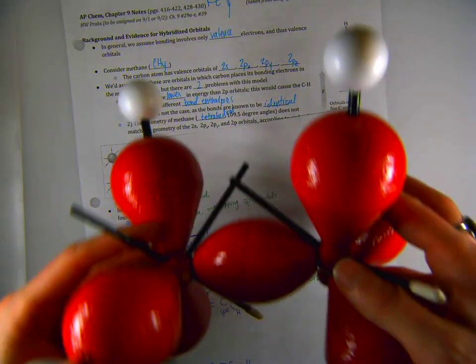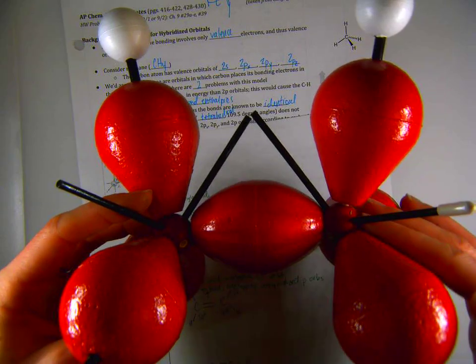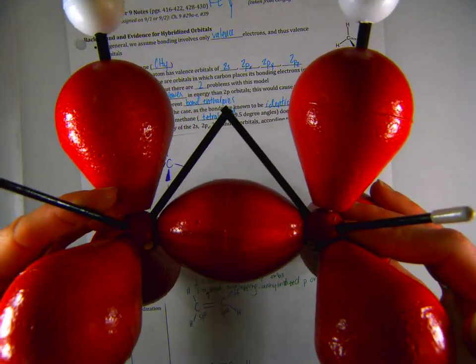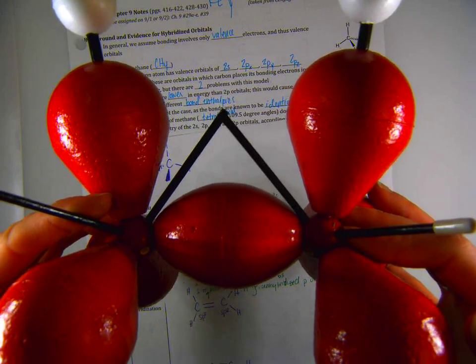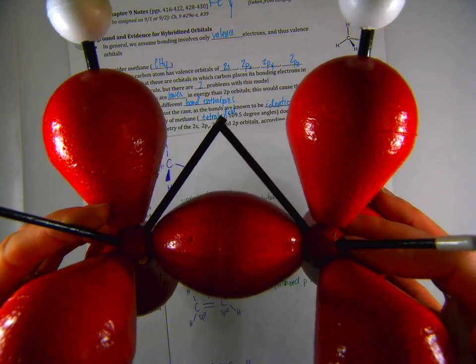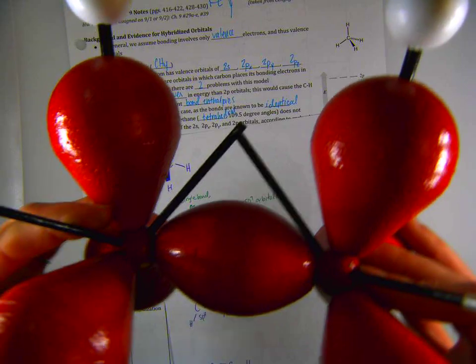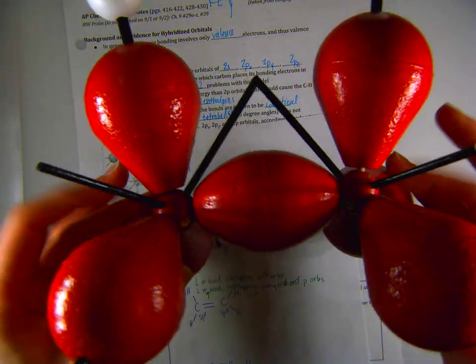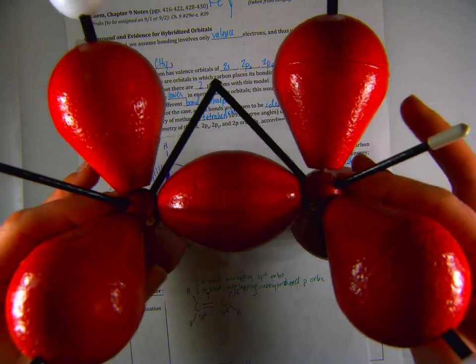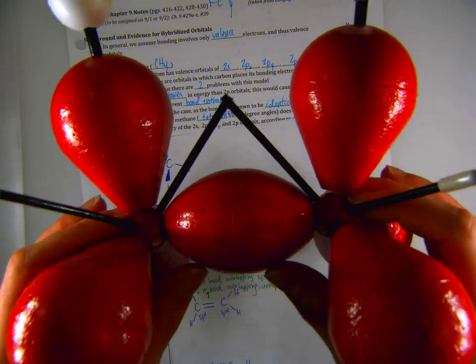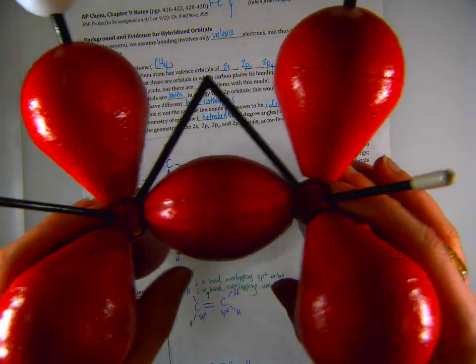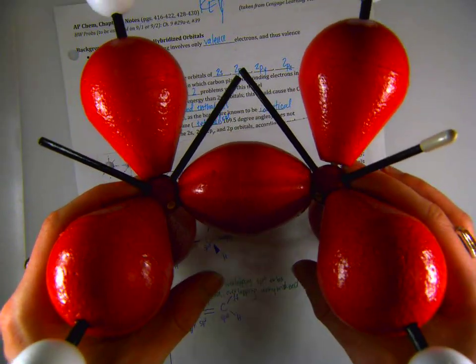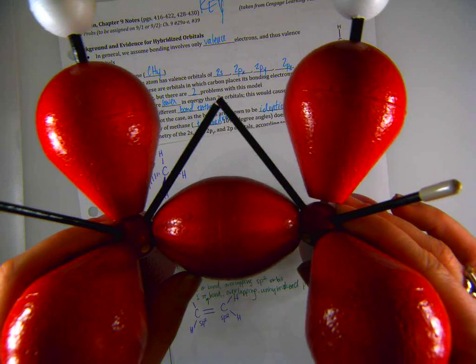This is my model of ethane, C2H6. Here's what's happening. In the center, where my fingers are pointing right now, there's the two carbon atoms. This red area in the center represents the overlapping sp3 orbital where the bonding electrons are held.